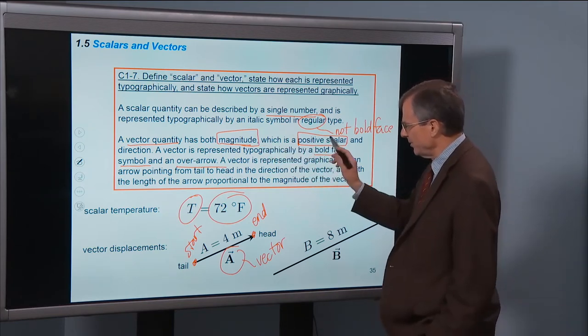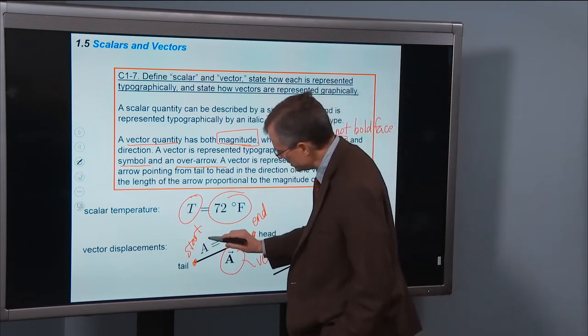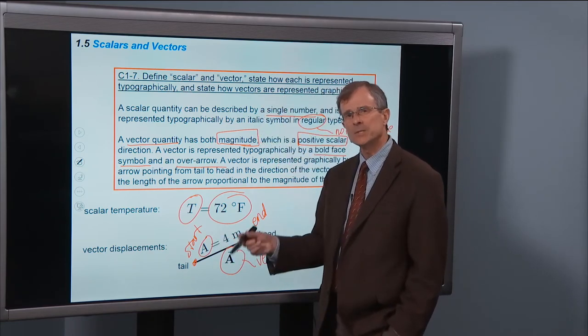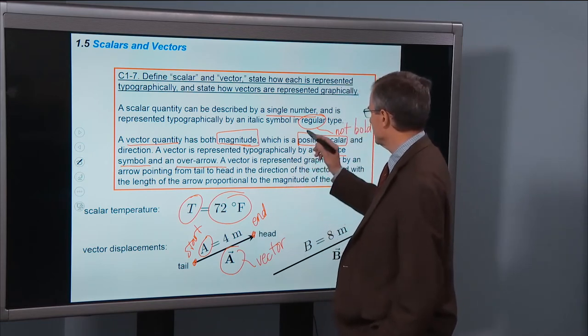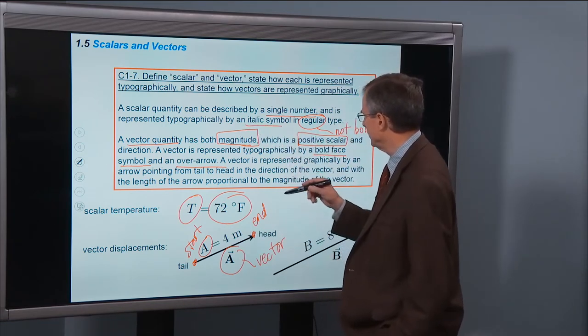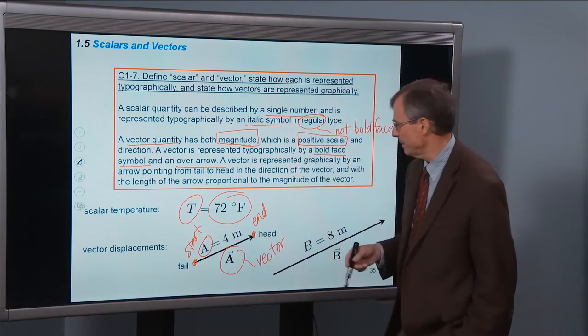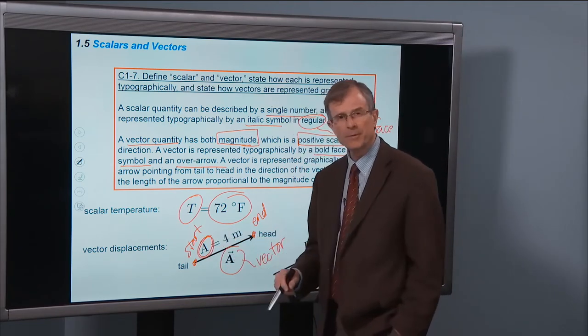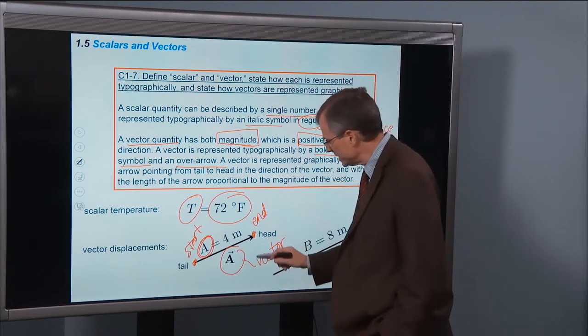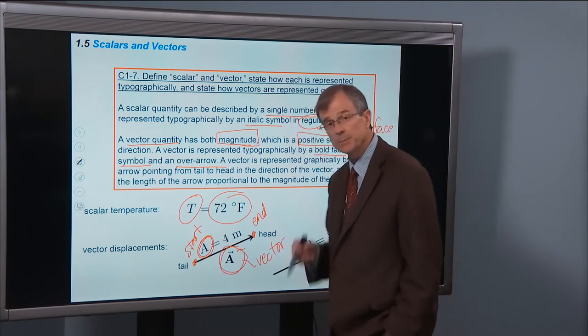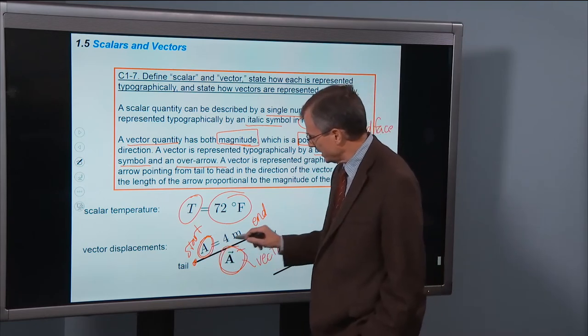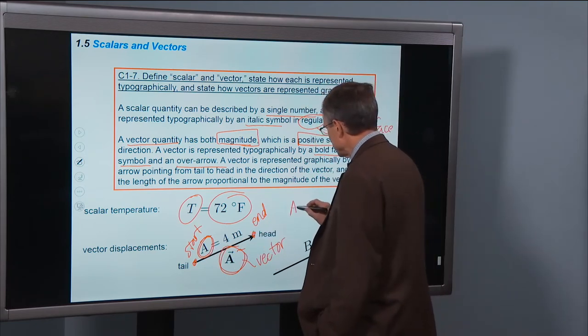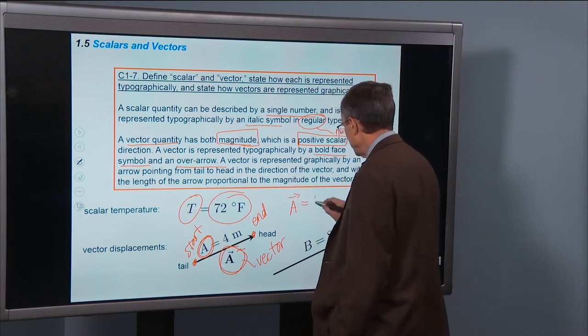The magnitude of the vector, so this quantity right here. A magnitude is a scalar. And how's a scalar represented? A scalar is represented by italic symbol in not bold face type. And so this is the representation of the magnitude of this vector, of this displacement vector, a. And I can set that magnitude equal to 4 meters.